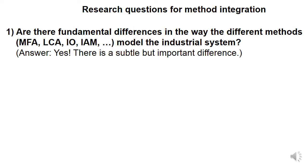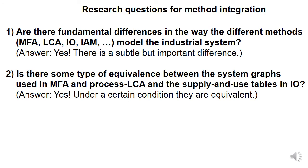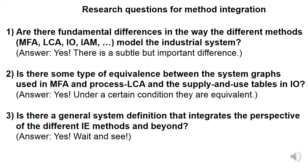We frame this work in three research questions. The first asks whether there are fundamental differences in the way the different methods — MFA, LCA, and IO — model the industrial system. The answer is yes, there is a subtle but important difference. The second asks whether there is equivalence between the system graphs used in MFA and process LCA and the supply and use tables in input-output analysis — and also here the answer is yes, under certain conditions they are equivalent. Finally, we ask whether there is a general system definition that integrates the perspective of different industrial ecology methods and beyond.